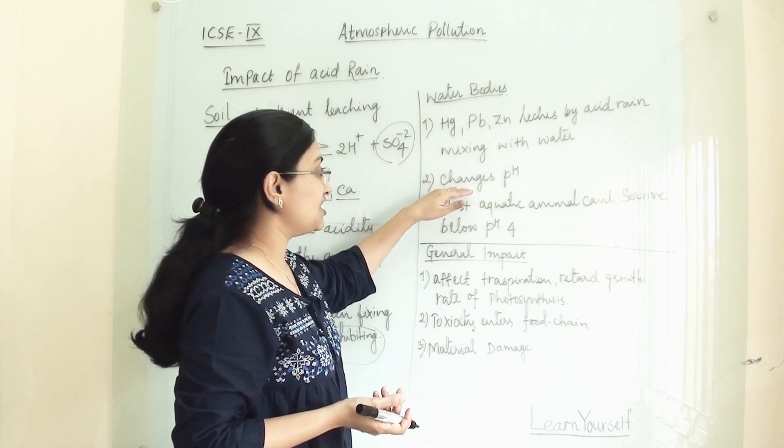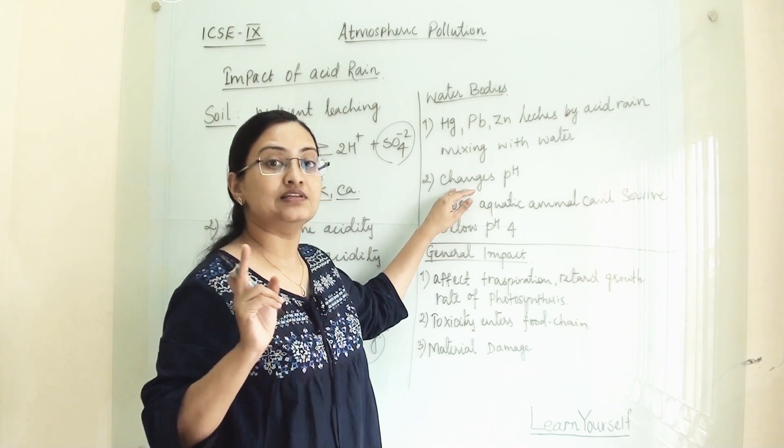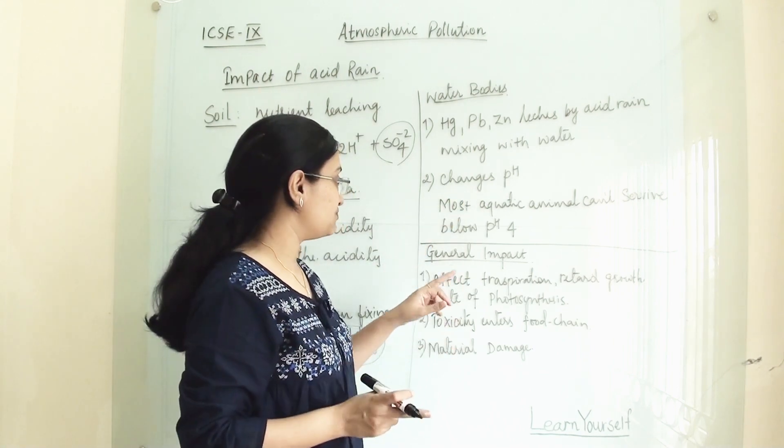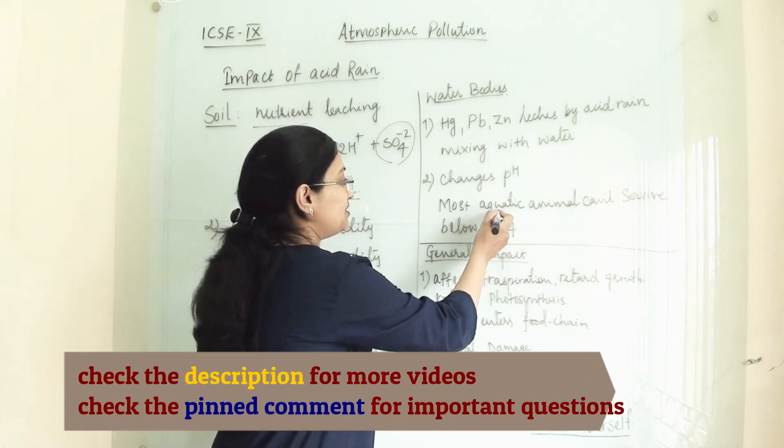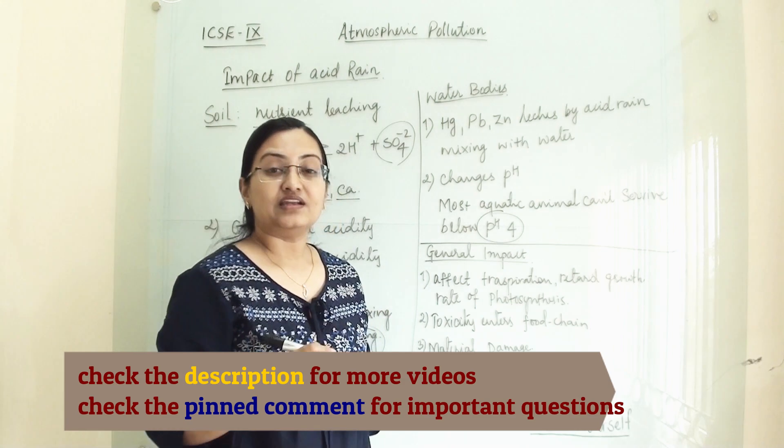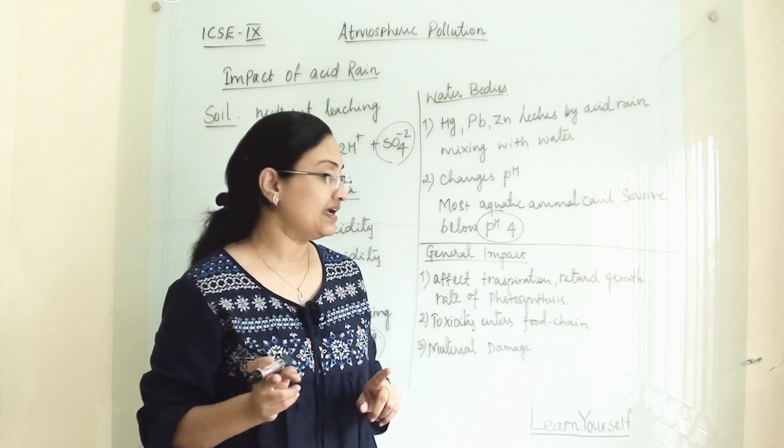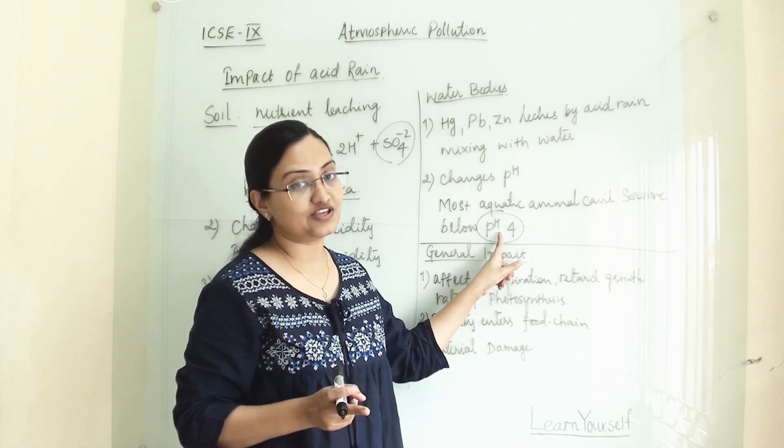Now it changes pH. When acid traces mix with water bodies, it will change its pH and lower down its pH. Most aquatic animals can't survive below pH 4. When it is lowering the pH, it will be harmful for the aquatic animals because they will not survive below pH 4.